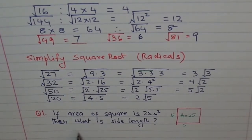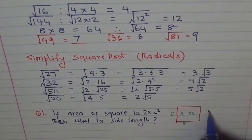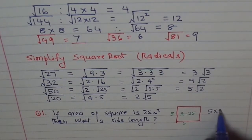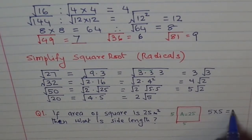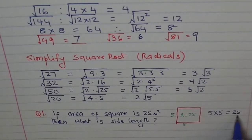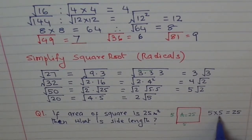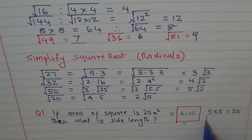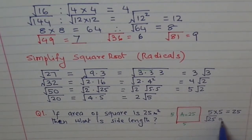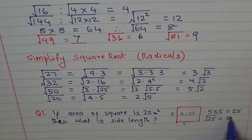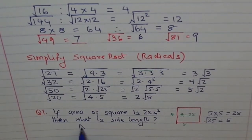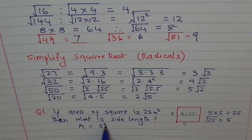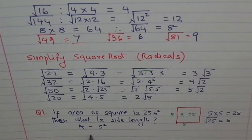5 times 5 equals 25 — that's the area. To find a side, we do square root of 25, and one of the equal factors. Square root of 25 is equal to 5. We write: area equals side squared. So what is the length of the side?